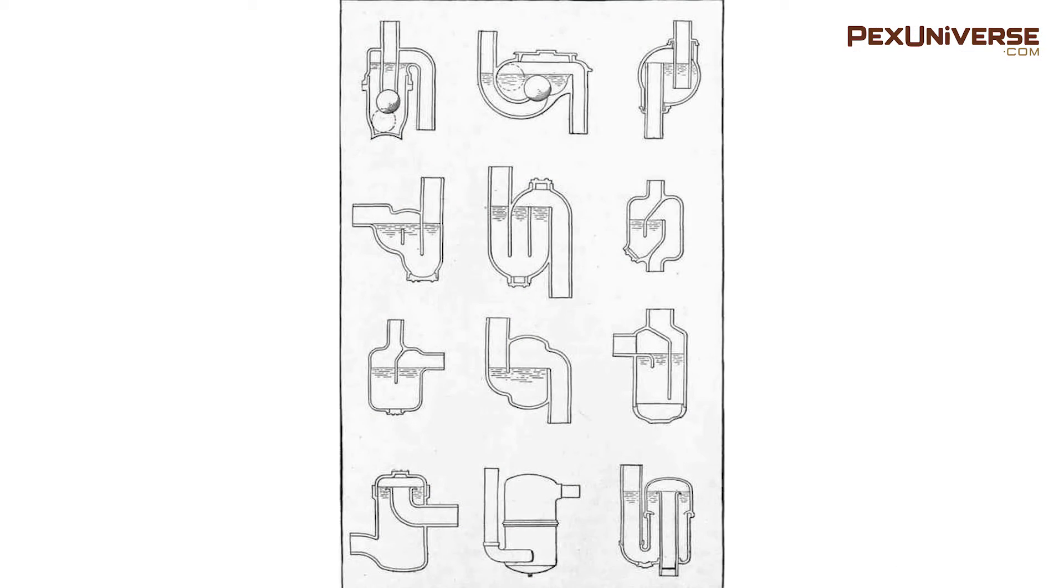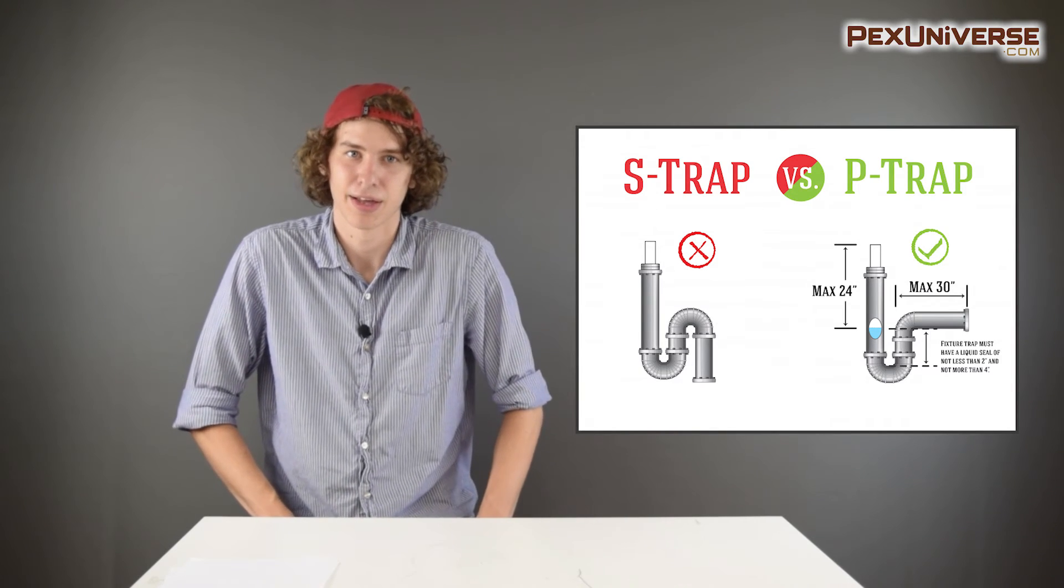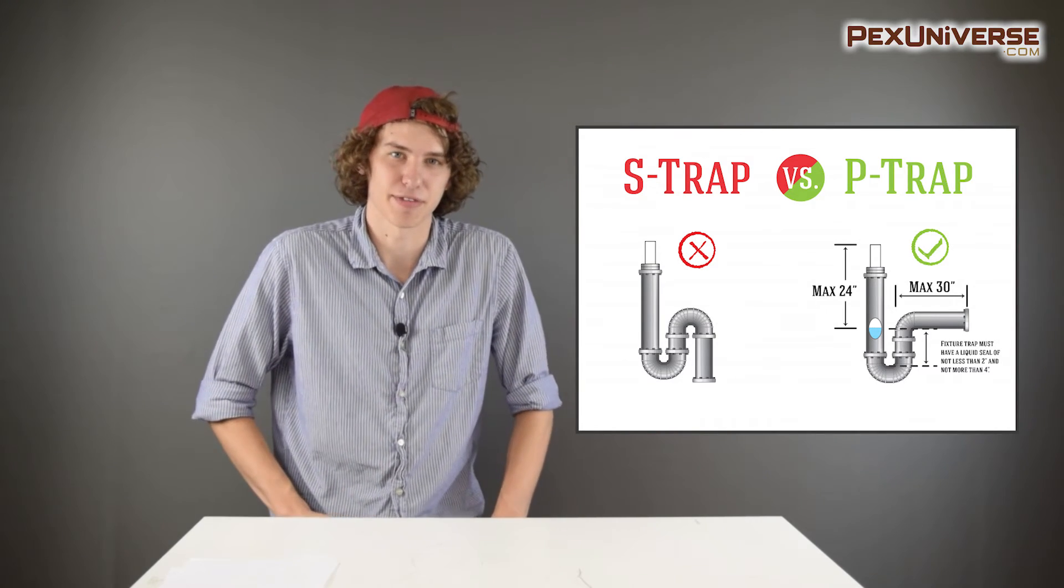Finally, we come to traps. I love all traps, but the code is not so open-minded. You are prohibited from using traps that require moving parts to make a seal, bell, pot, bottle traps with internal parts, crown vented traps, drum traps, and S traps. Yep, no S traps. That's one that really gets a lot of people. All traps must have fresh air vents installed, no less than one half the diameter of the drain.